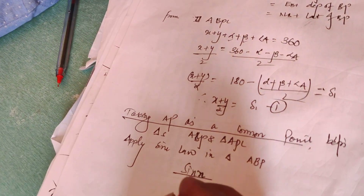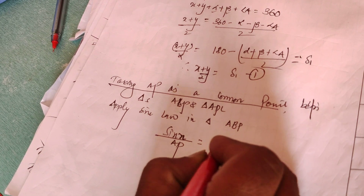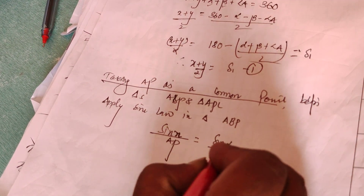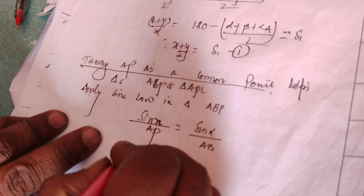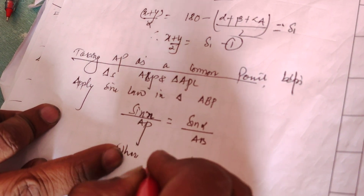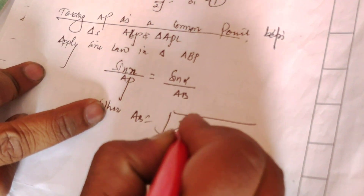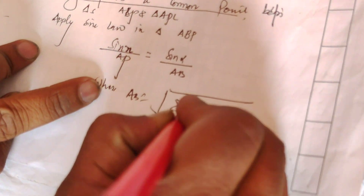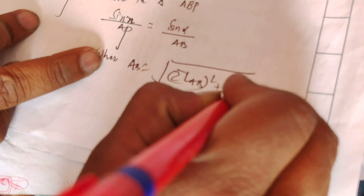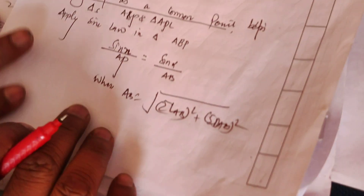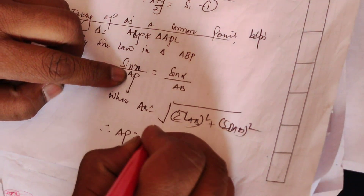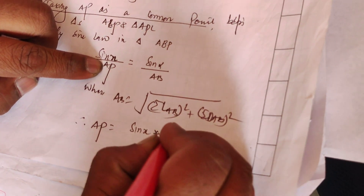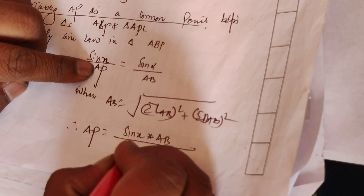AP is equal to sin alpha divided by AB. AB is equal to the square root of (summation of latitude of AB) squared plus (summation of departure of AB) squared. AB is equal to AB·sin x divided by sin alpha.